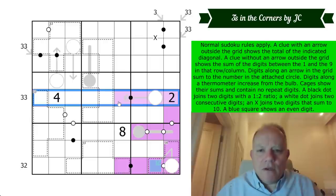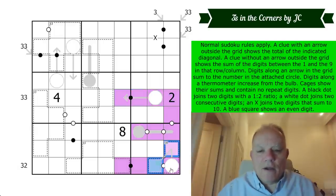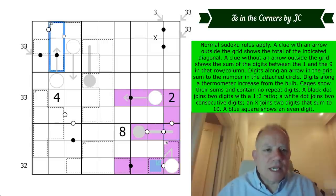one and nine are placed somewhere, obviously, and the digits between them add up to 33. Digits along an arrow in the grid sum to the number in the attached circle. Now it's a little difficult to see in the purple, but those two are on an arrow adding up to the number there. Those two are on an arrow adding up to the number in the attached circle. Digits along a thermometer increase from the bulb to the tip.